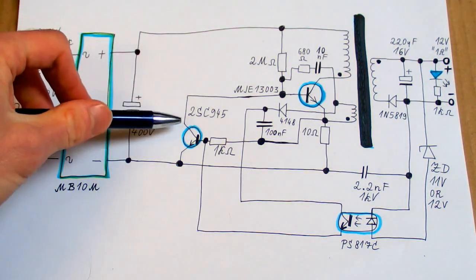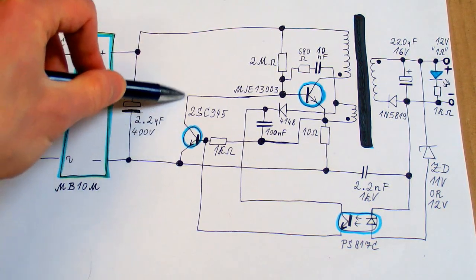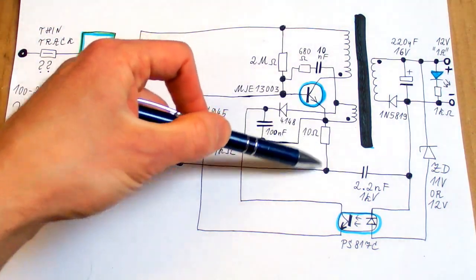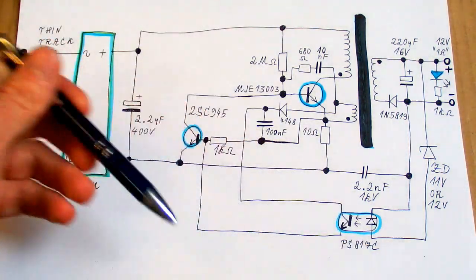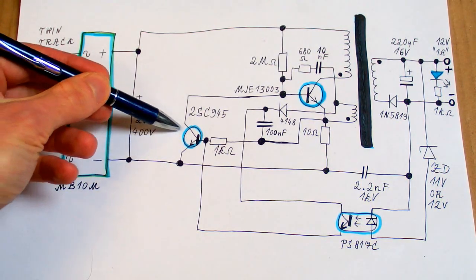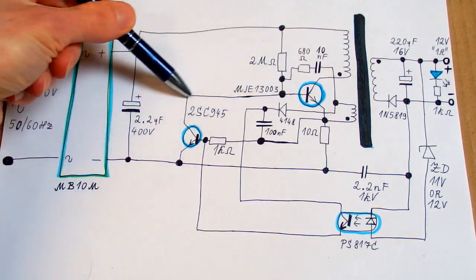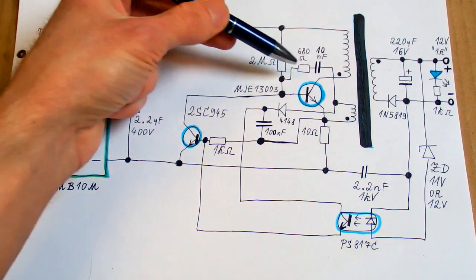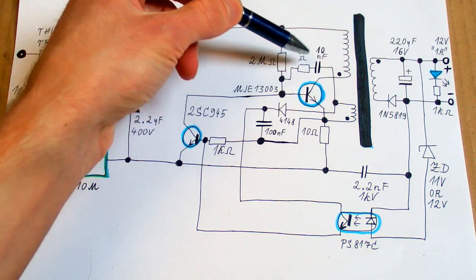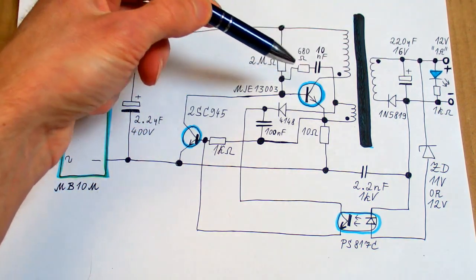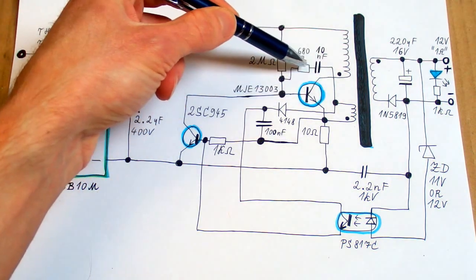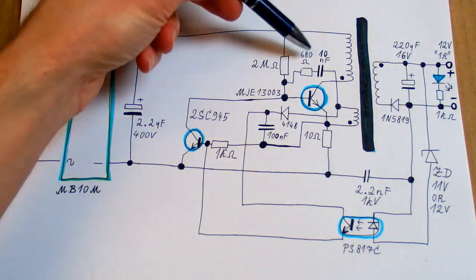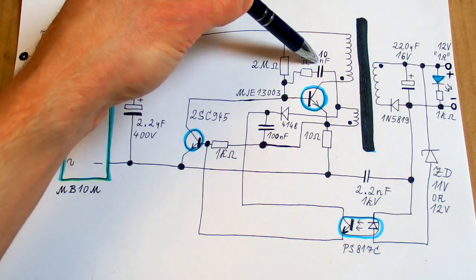If this transistor turns completely on, it will turn this transistor off immediately. It probably happens if there is a massive overcurrent. But during the regulation this transistor is just partly on. So it just draws some current from this feedback circuitry and helps to discharge this capacitor faster. So the duty cycle is slower. So each cycle is actually shorter because this capacitor discharges faster. And this capacitor probably also sets the operating frequency of it.